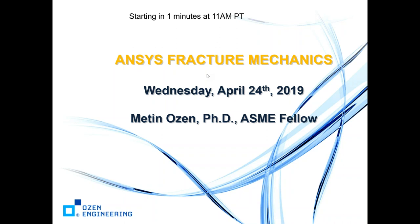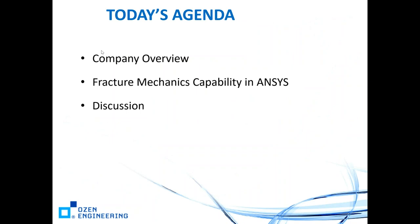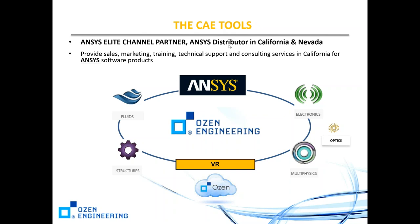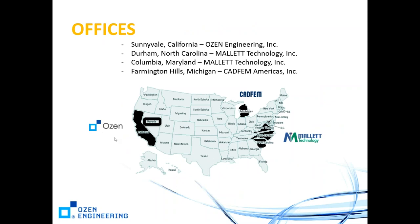Hi everyone. Today we are going to talk about fracture mechanics and the capabilities in ANSYS. First, a company overview: we are the ANSYS elite channel partner in California and Nevada. We provide sales, marketing, training, technical support, and consulting services for ANSYS software products — including structural, fluids, electronics, multi-physics, optics — and we also have a VR system and an Ozone cloud computing platform.